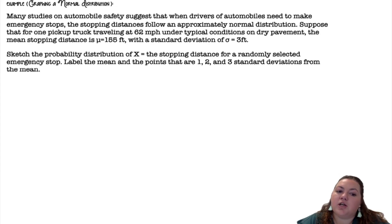Graphing a normal distribution. Many studies on automobile safety suggest that when drivers of automobiles need to make emergency stops, the stopping distance follows an approximately normal distribution. Suppose that for one pickup truck traveling at 62 miles per hour under typical conditions on dry pavement, the mean stopping distance is 155 feet with a standard deviation of three feet.